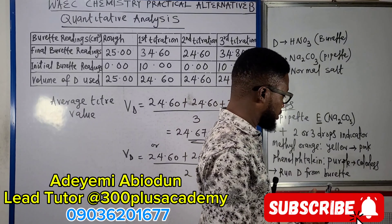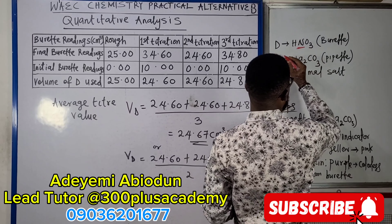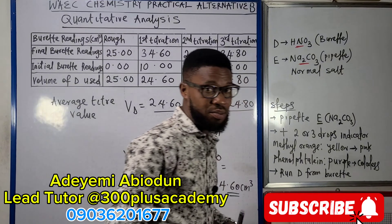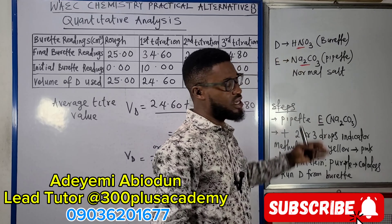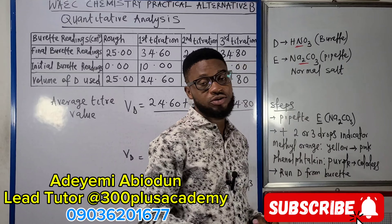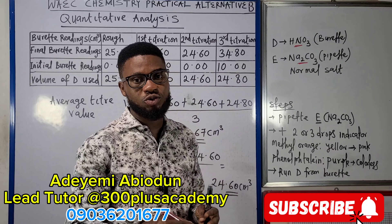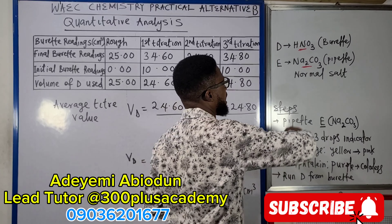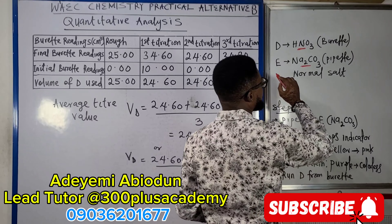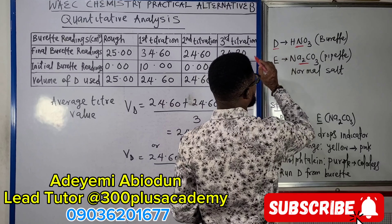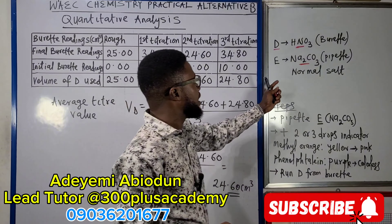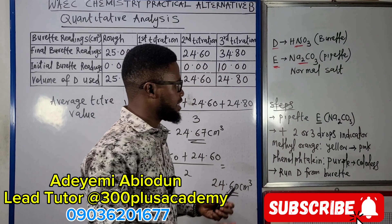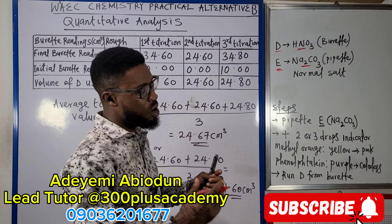The titration experiment this time around is going to be between dilute HNO3 and sodium carbonate. HNO3 is going to be in the burette and sodium carbonate is going to be pipetted into a conical flask. Our dilute HNO3 going into the burette is labeled D, and Na2CO3 which we pipette is labeled E.